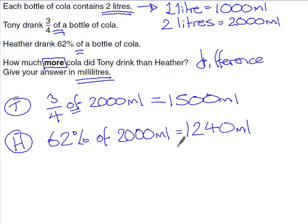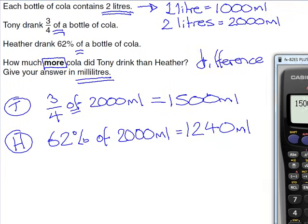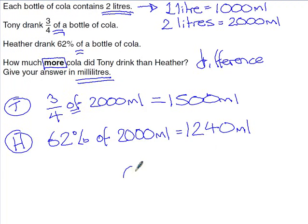Go back and re-read the question to check what was actually asked. They want the difference, so calculate 1500 − 1240 = 260 millilitres. That's how much more Tony drank than Heather. This was a three or four mark exam question.